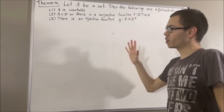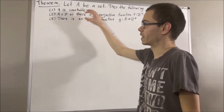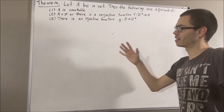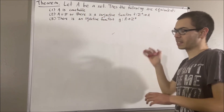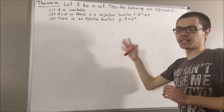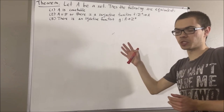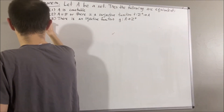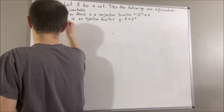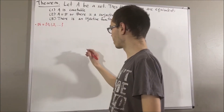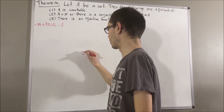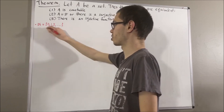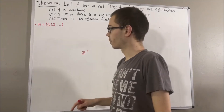Before we get into proving this theorem, let's first get some context. For us, we're going to say that the natural numbers is the set of integers greater than or equal to zero. And the positive integers is the set of natural numbers not including zero.